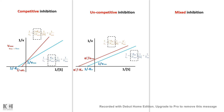For uncompetitive inhibition, the Lineweaver-Burk plot shows parallel lines, with the inhibited line (red) being steeper. Since both Vmax and Km have decreased, both 1/Vmax and 1/Km have increased, so the line is steeper and the x-intercept shifts further to the left on the negative x-axis.